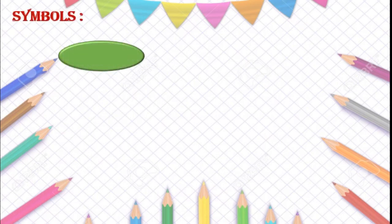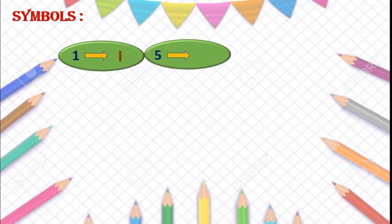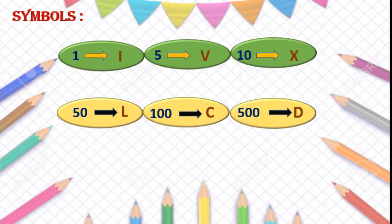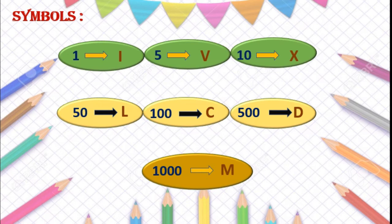Now students, some more symbols we will learn today. We already know: 1 is I, 5 is V, 10 is X. Now four new symbols: 50 is written as L, 100 is written as C, 500 is written as D, and 1000 is written as M. Remember, we use only capital alphabets.